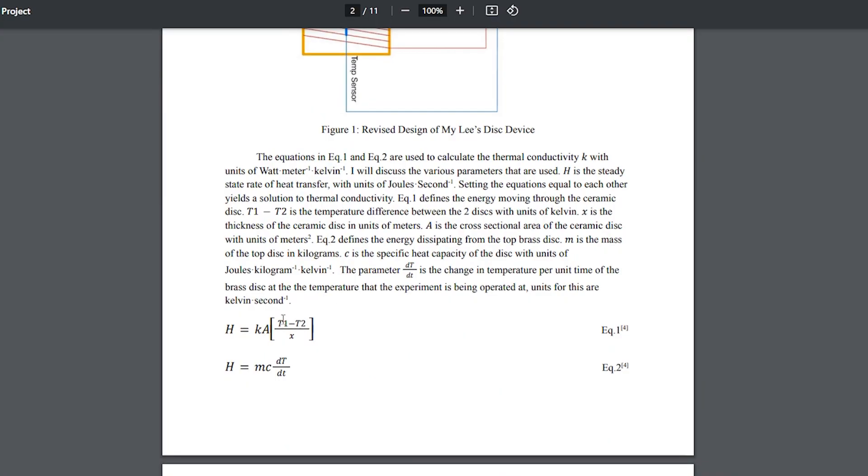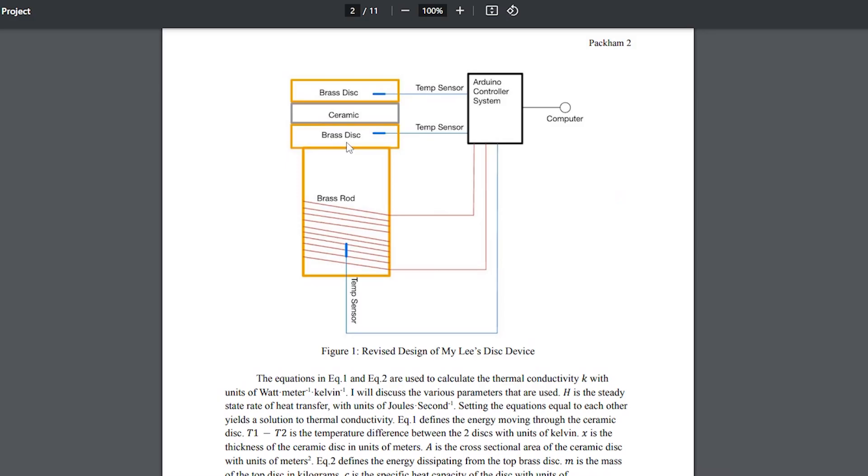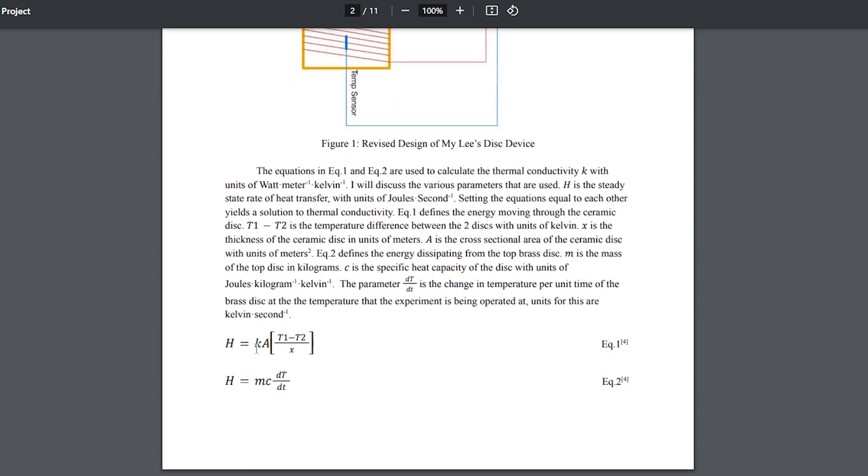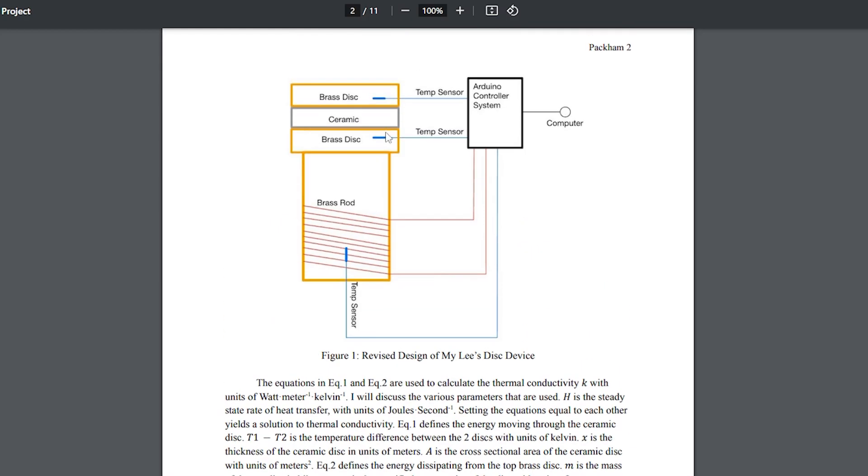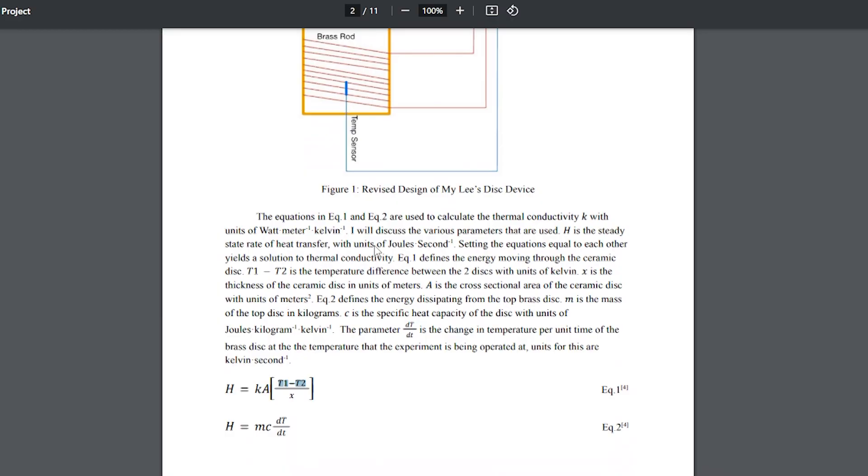To measure the thermal conductivity of a ceramic, you need to know these two equations. Equation one measures the rate of heat transfer between the bottom brass disk and the top brass disk via conduction through the ceramic. This K is the coefficient of thermal conductivity. This A is the cross-sectional area of the ceramic. This X is the thickness of the ceramic. And T1 minus T2 is the delta temperature between the top brass disk and the bottom brass disk.